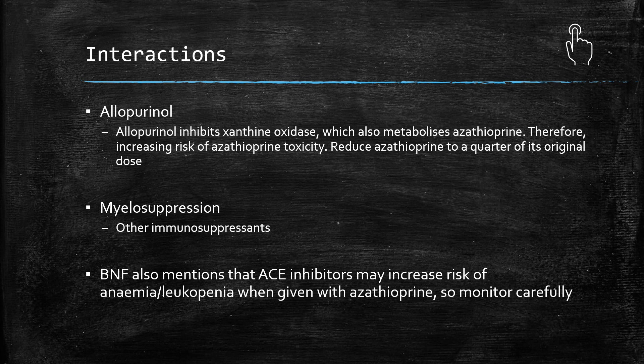In terms of myelosuppression, any other medications which can cause bone marrow suppression should be noted as a risk - things like methotrexate, for example. The British National Formulary also mentions that ACE inhibitors such as lisinopril, ramipril, and captopril may increase the risk of anaemia and leukopenia - low white blood cells - when given with azathioprine. So monitor carefully and be aware that they increase the risk of low red blood cells and low leukocytes.